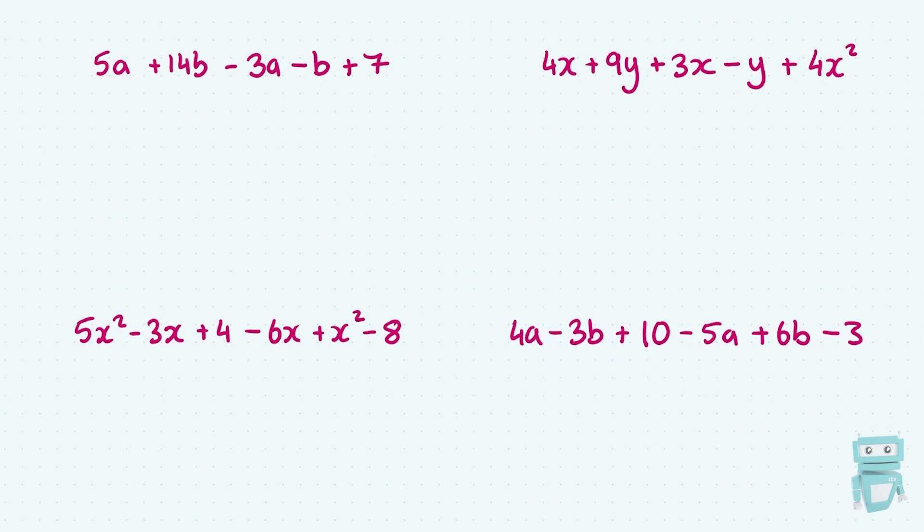So the a's are going to go together, the b's are going to go together, and if there's numbers on their own without a letter, they're all going to go together. So first thing I'm going to do is rearrange this expression and put like terms together. So you can see I've got a 5a minus 3a, so I'm going to write those beside each other, 5a minus 3a.